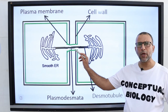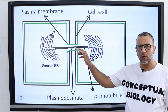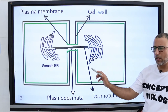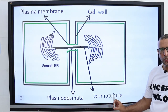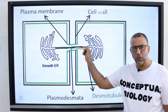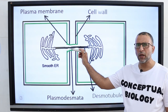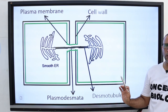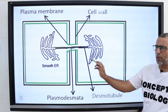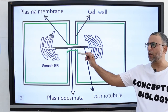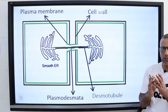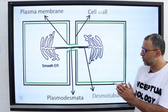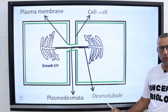Most Plasmodesmata contain a narrow cylindrical structure called the desmotubule. The desmotubule runs through the channel of the Plasmodesma and connects the smooth endoplasmic reticulum of two adjacent cells. It is a tube within the Plasmodesma formed by compressed endoplasmic reticulum, and the majority of Plasmodesmata contain a desmotubule.